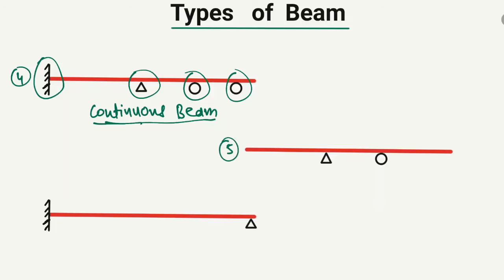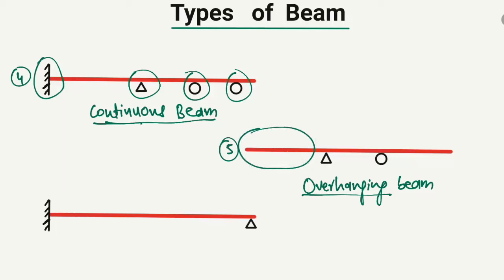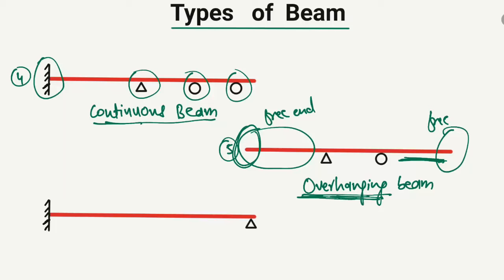The fifth type of beam is known as the overhanging beam. It is called an overhanging beam because the ends of the beam are overhanging — parts of the beam hang beyond the supports with no supports provided at either end. When the ends of the beam are free and unsupported, such a beam is called an overhanging beam.